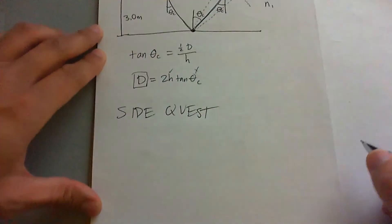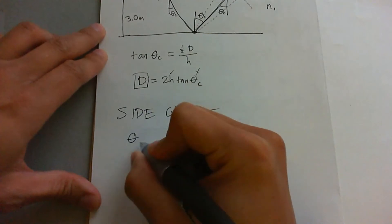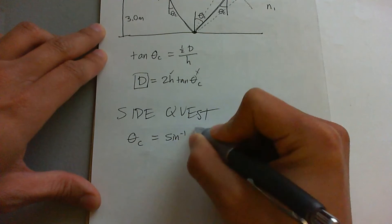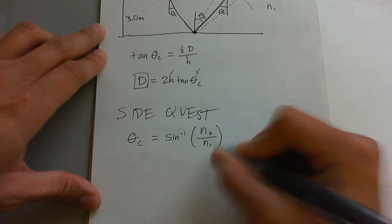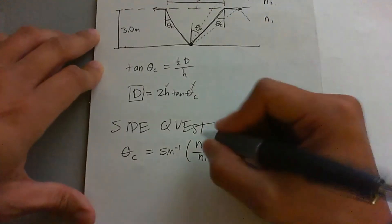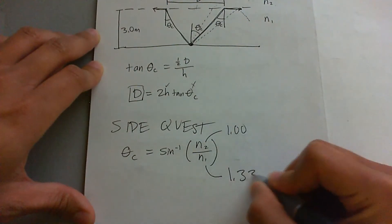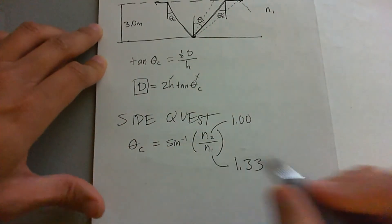We use this critical angle formula as a side quest. That's going to be theta C equals inverse sine of N2 over N1, where N2 is the lower index than N1. So plug in the numbers: 1.00, and N1 for water is 1.33.